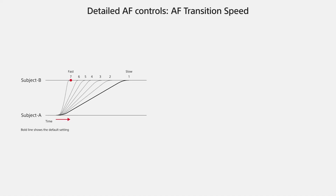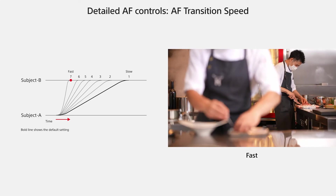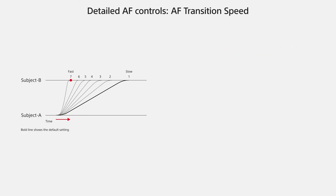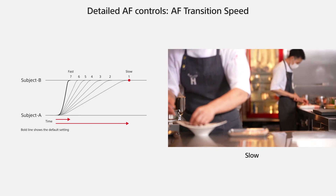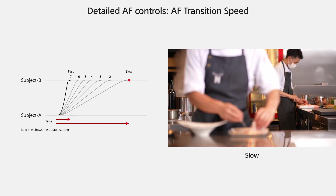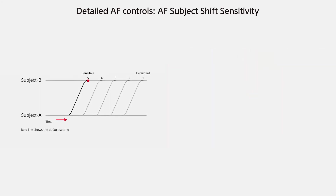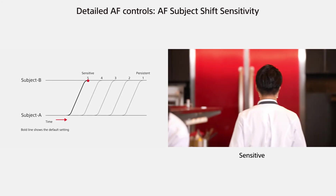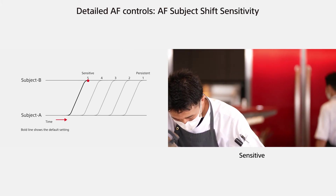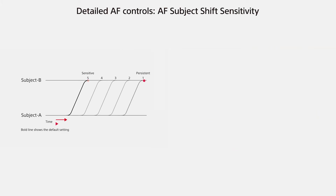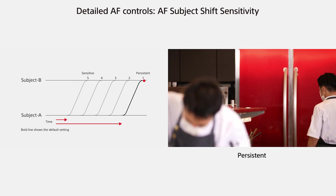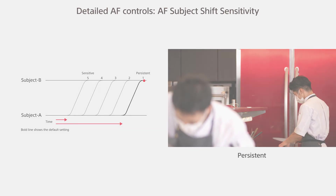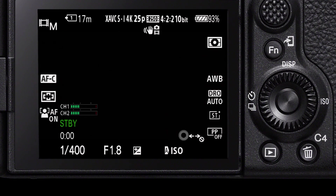With these two settings you can fine-tune the autofocus in movie mode to better suit the scene or environment with nuanced cinematic expression. That is how you adjust the autofocus speed and sensitivity for the Alpha 7S Mark III. Thanks for tuning in and we'll see you in the next one.